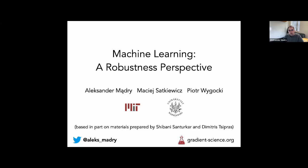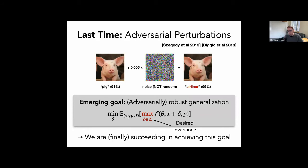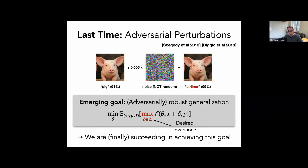Today we conclude our introductory journey into machine learning from a robustness perspective. In the first lecture we introduced one of the most prominent examples of how brittle our ML models are — adversarial examples — and outlined an approach to train classifiers that are actually robust to such perturbations. This involves adversarial robust training: instead of updating model parameters directly on training data, we first find the most confusing perturbation of each training point, then update based on that.